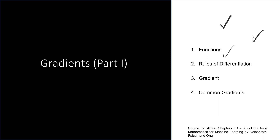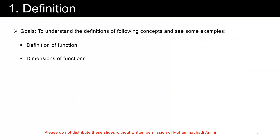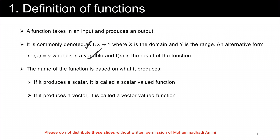Part one of gradients. The goal of this part is to understand the definition of functions and also how we can measure them. A function usually takes an input and produces an output. This is how we define a function. For example, f of x is equal to 2 multiplied by x. So this is a function.